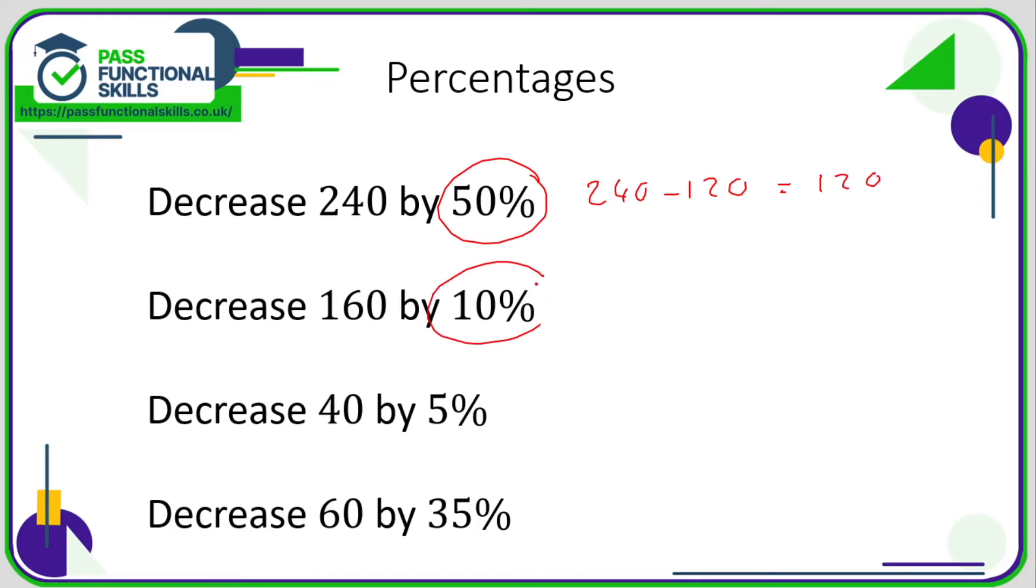Here we're working out 10% of 160, which is 16. So our calculation is 160 minus 16, which is, well, 160 take away 10 is 150, 150 take away 6 is 144.